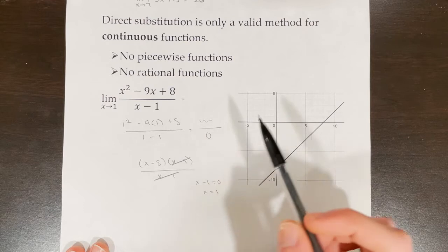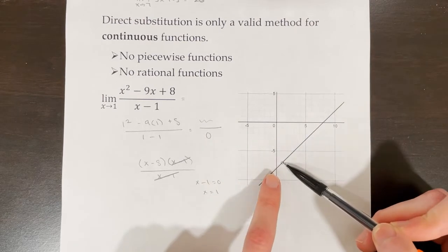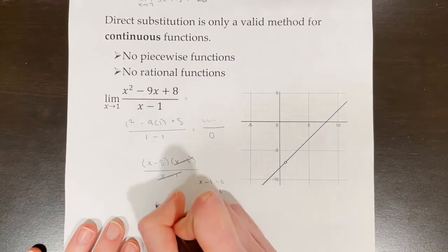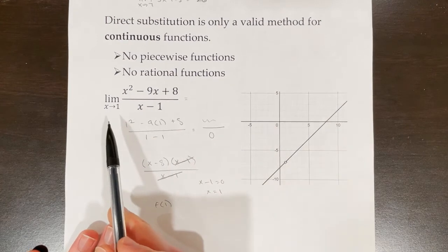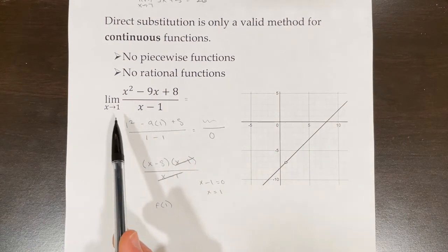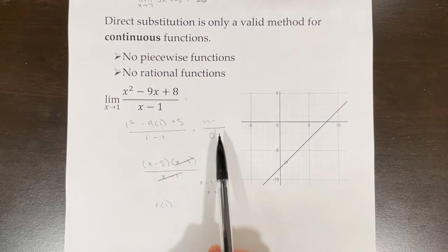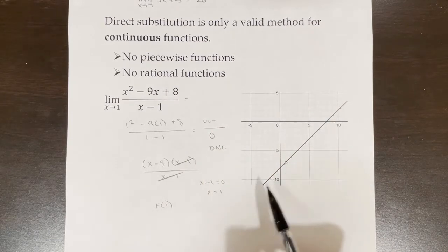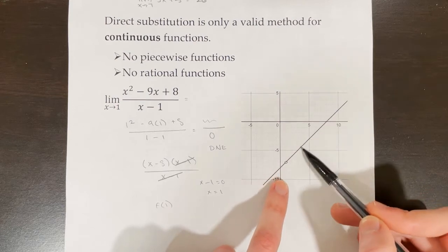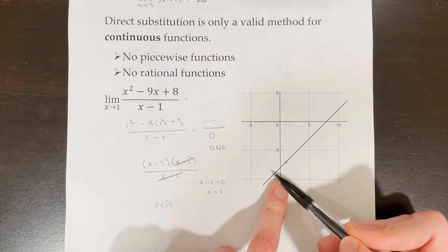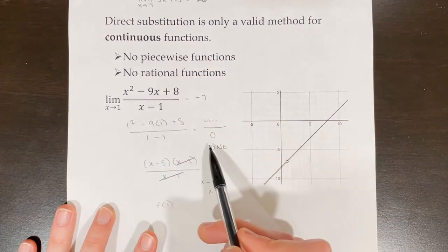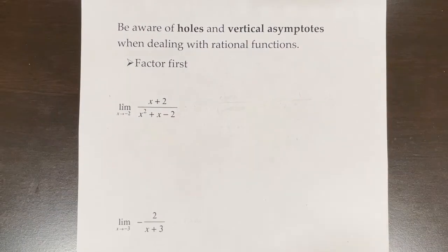However, a limit can exist at a hole. A limit is talking about what the function is approaching as we get to that point — not what the function actually is. We are not trying to find f of 1; we are trying to find the limit as x approaches 1. That's why we cannot always use direct substitution for rational functions. Looking at the graph, from the right side f of x is approaching negative 7 as x approaches 1, and from the left side it's also approaching negative 7. So the limit here is negative 7, but we would not have been able to find that through direct substitution alone.